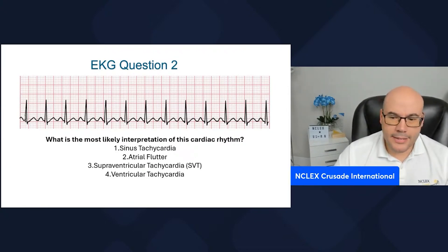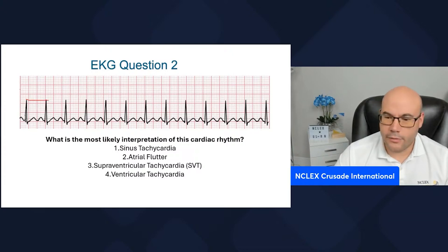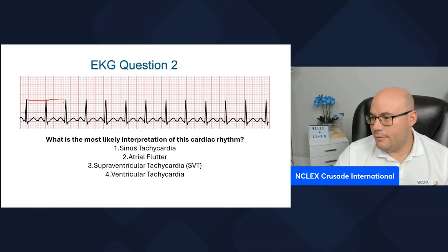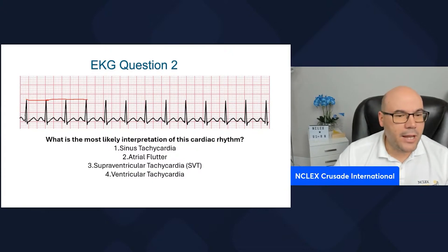Number one, let's identify if this is a regular rhythm. We can see we have two big squares and a small square on the first R2R interval. From the second R2R interval to the third, we have two big squares and a little bit more than one. From the third to the fourth, we have two big squares and about one and a half small boxes — about the same. So this is a regular rhythm.